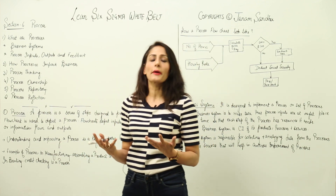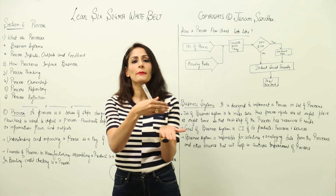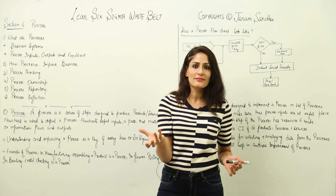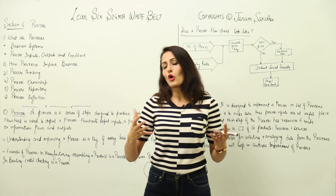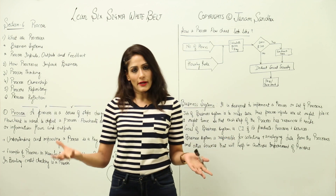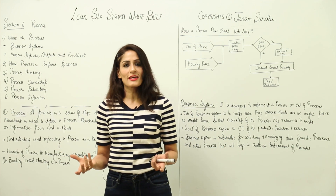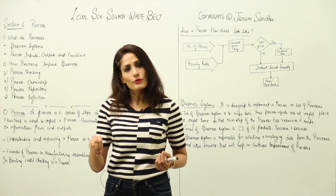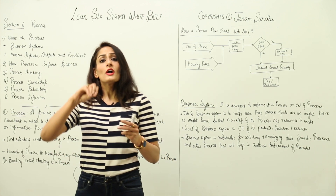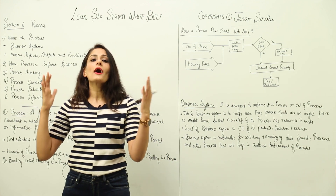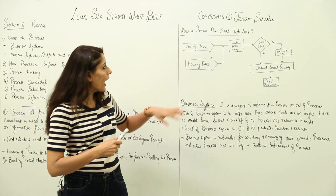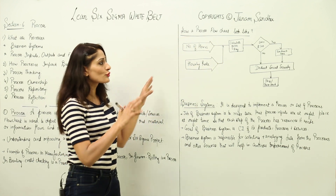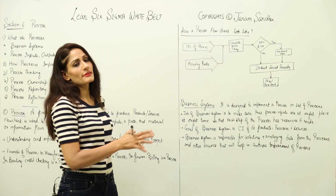We are surrounded by processes. For example, in manufacturing, assembling a product is a process. In finance, billing is a process. In banking, checking a credit score is a process. So we are all involved in processes. Now, how does a process flow chart look? I've used a very simple example.